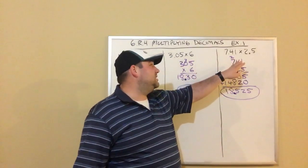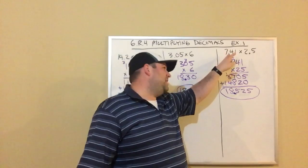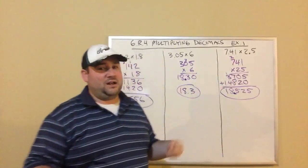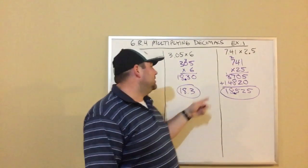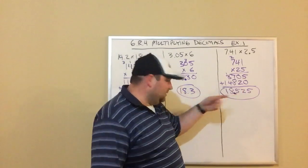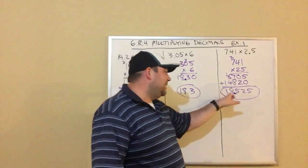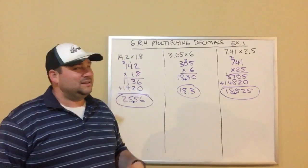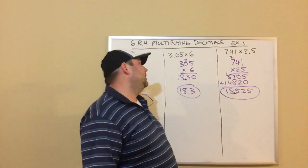Again, that's another one that makes sense. You can use your common sense here. 7.41 is about 7. Two and a half, you could say it's about 2, but it's about 3. 7 times 3 is 21, but we got a little less than 21, which makes sense. If I had gotten 185 as my answer, that wouldn't make sense.